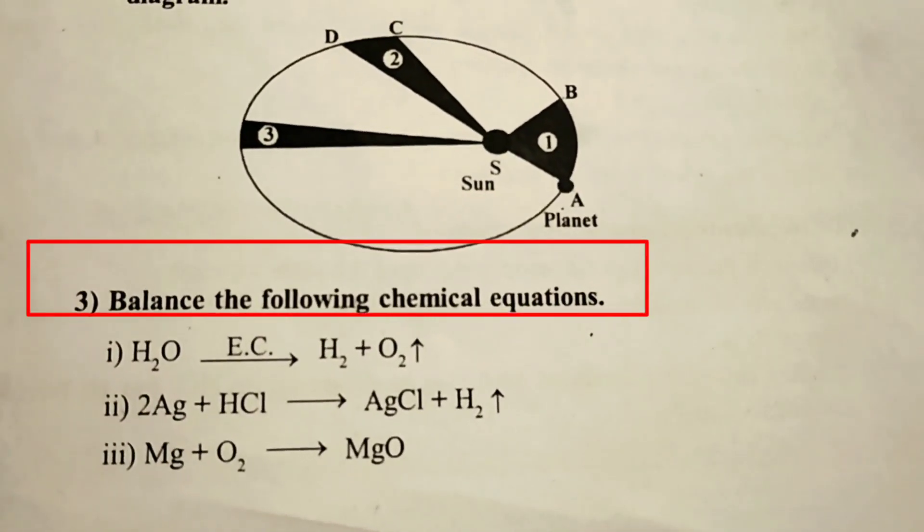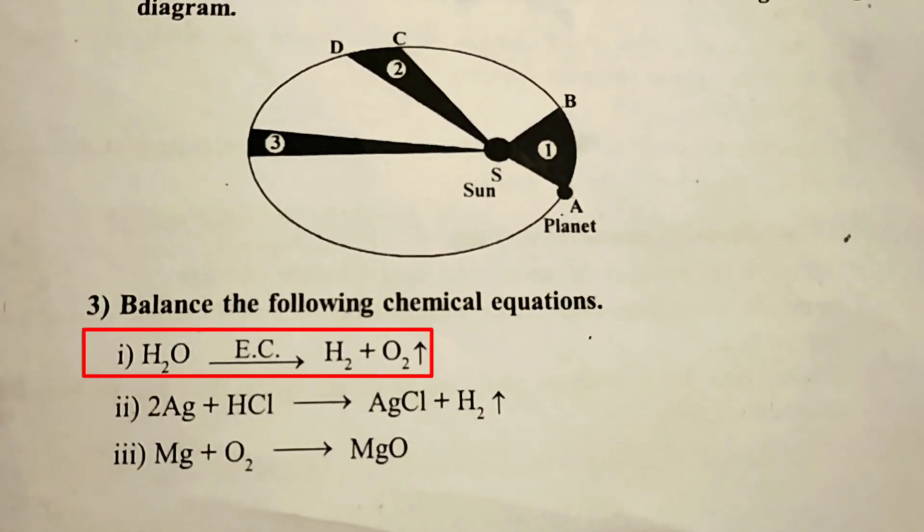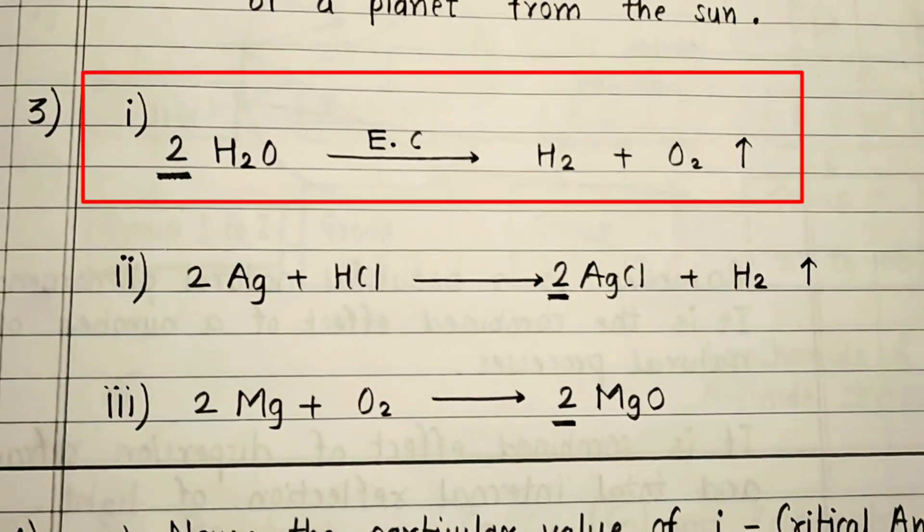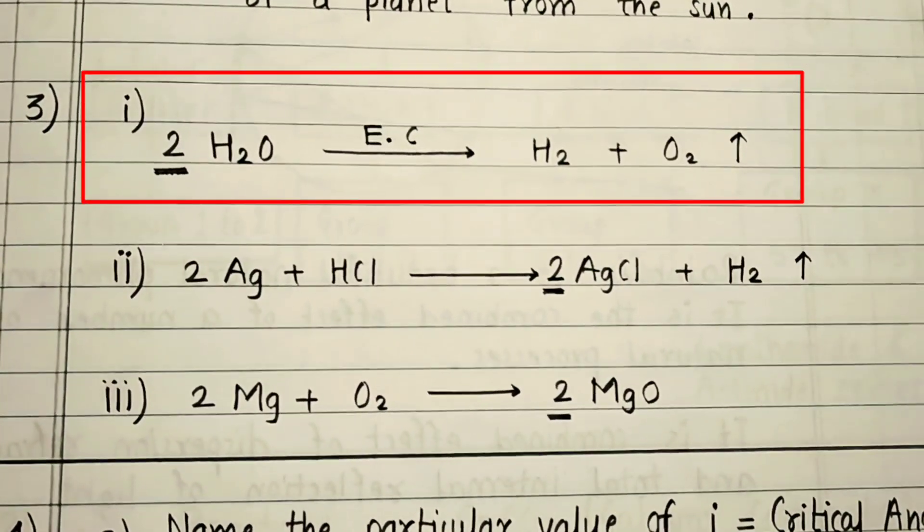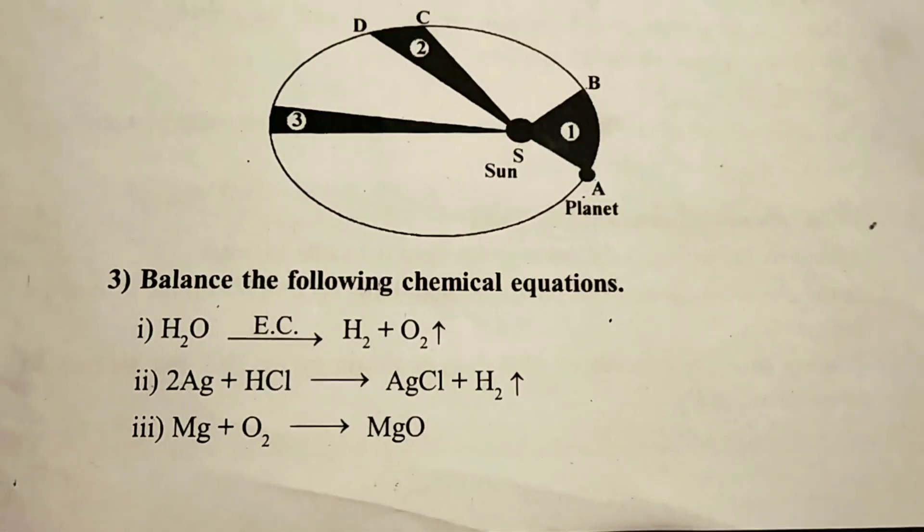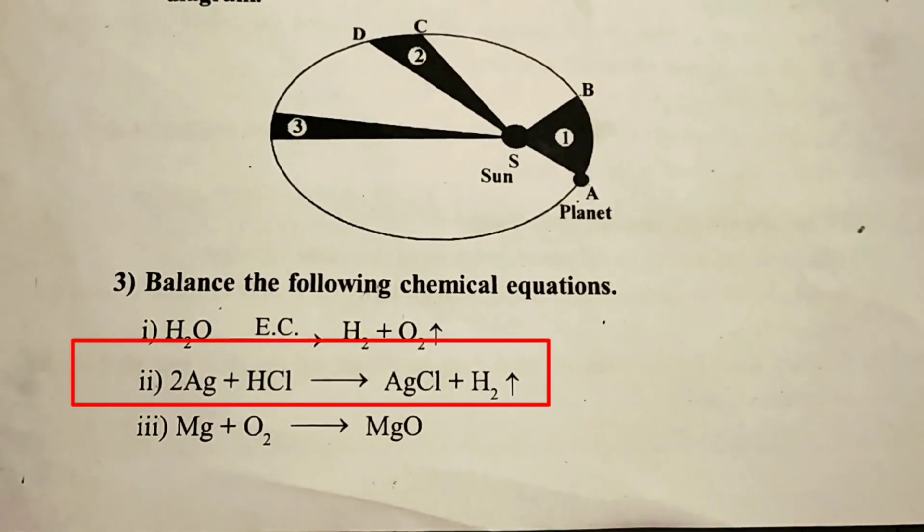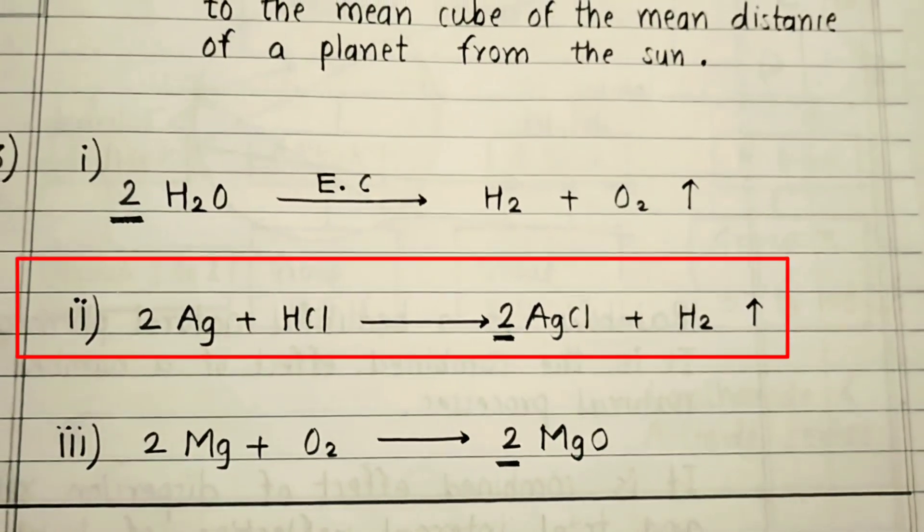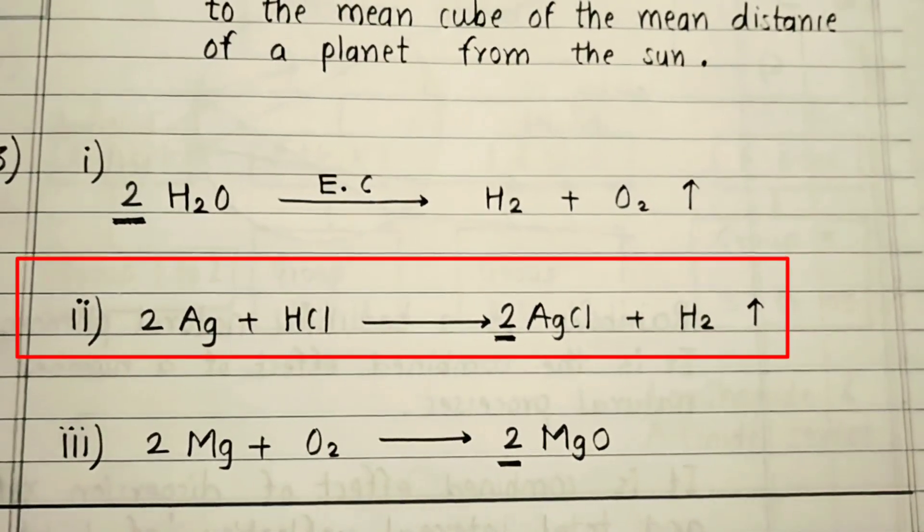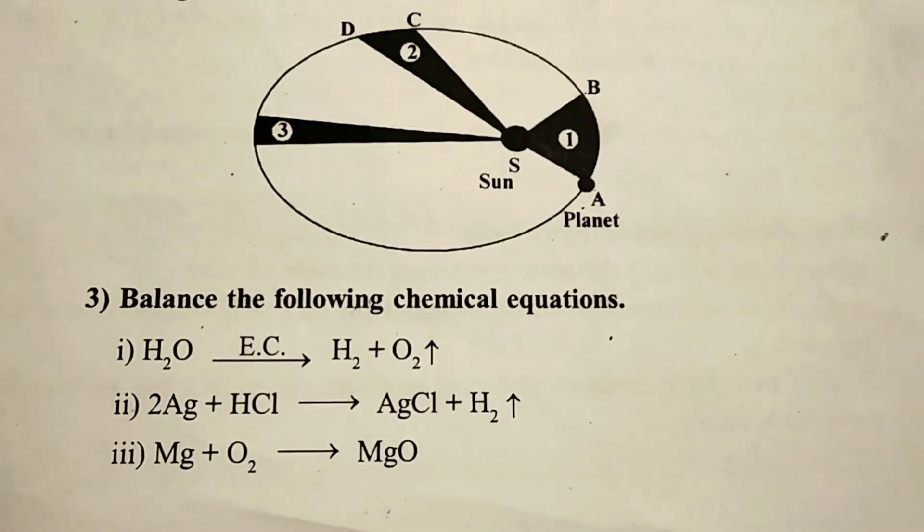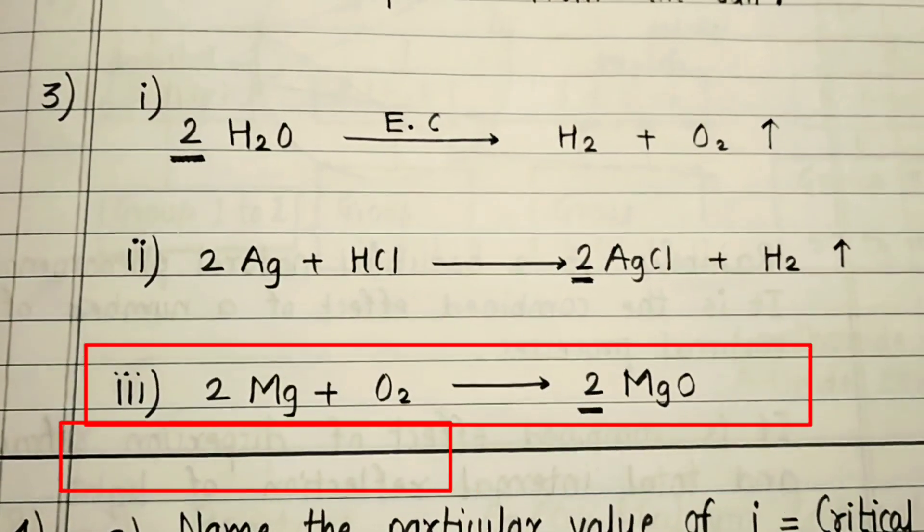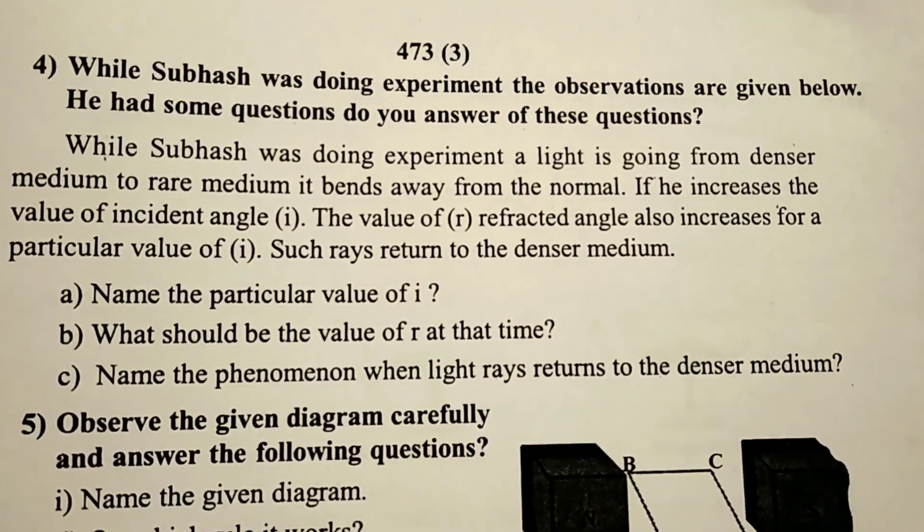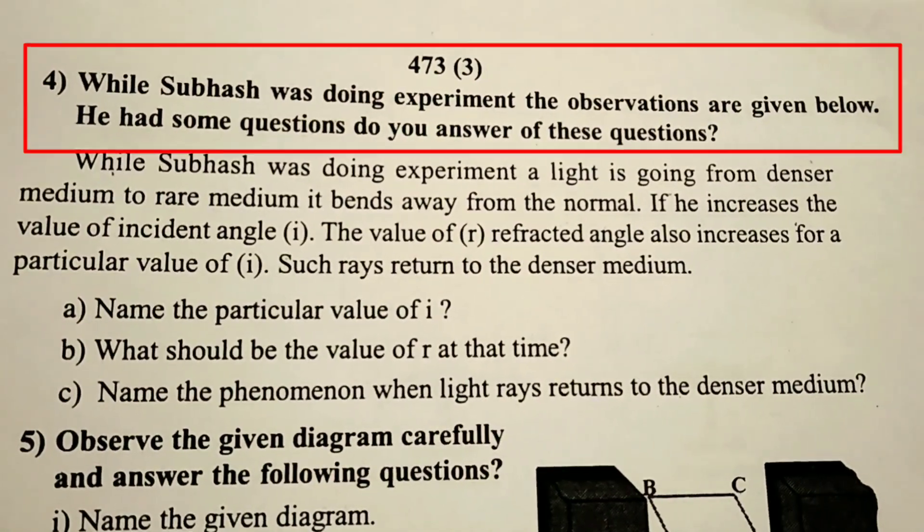Balance the following chemical equation. 2 H2O with electric current gives 2 H2 plus O2 gas.